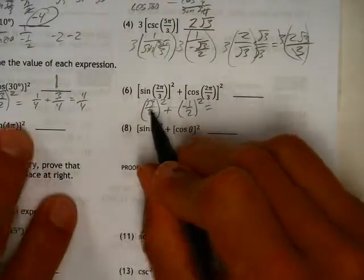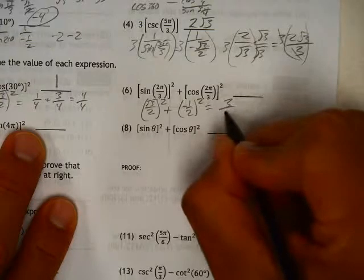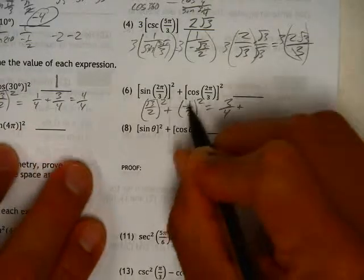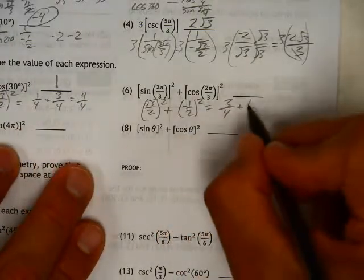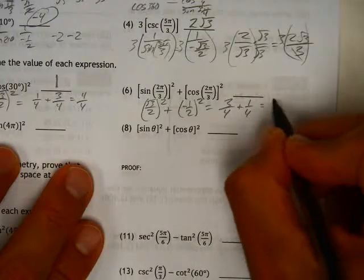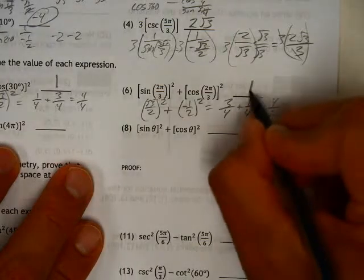You square this, it looks vaguely similar to what we just saw a moment ago, 3 over 4. Plus, that is negative, but when you square it, it becomes positive. 1 over 4 becomes 4 over 4. Wait a second, another 1.